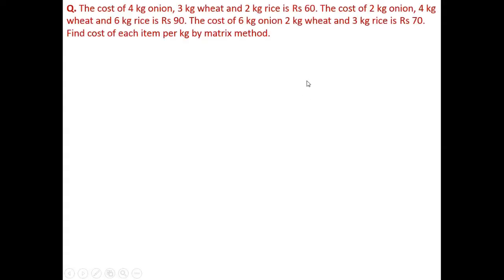Hello everyone. Today we are going to discuss how to solve a problem by matrix method. Let us consider this question: the cost of 4 kg onion, 3 kg wheat and 2 kg rice is 60 rupees. The cost of 2 kg onion, 4 kg wheat and 6 kg rice is 90 rupees. Similarly a third condition is given. We have to find out the cost of each item per kg by matrix method.